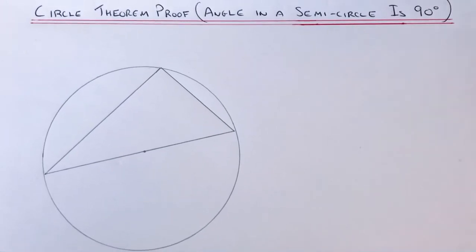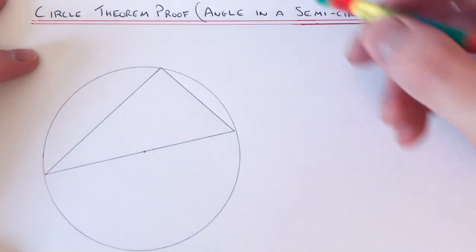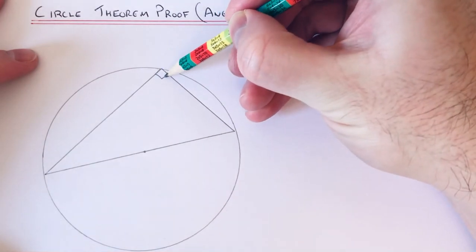Hi guys, welcome back, this is Maths3000. Today we're going to prove the circle theorem that the angle in a semicircle is a right angle.